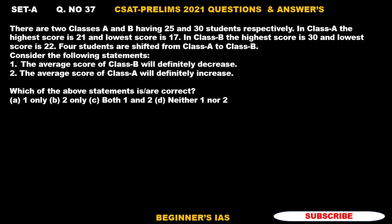Four students are shifted from class A to class B. Consider the following statements: the average score of class B will definitely decrease, and the average score of class A will definitely increase. We need to identify the correct statement here.